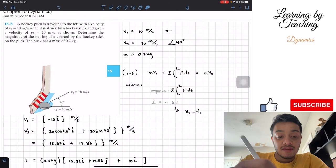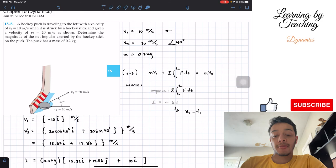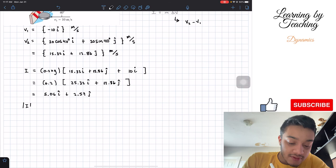If we go back to the question, it's telling us that they want the net impulse, meaning they want the magnitude of this impulse. So we're going to find the magnitude.